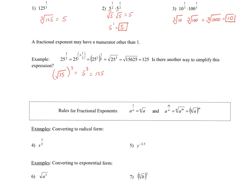Here are the general rules. If we have a base with a fractional exponent, we can convert that to radical form as discussed. Now, what happens if the numerator is something other than 1? We can apply that exponent either inside the radical or outside — it doesn't matter where we apply it. They will be equivalent values, and sometimes it depends on your preference. If we want to convert x to the 3/5 into radical form, that will become the fifth root of x to the third power, or the fifth root of x, the whole quantity to the third power. Those are equivalent — either one would be acceptable.